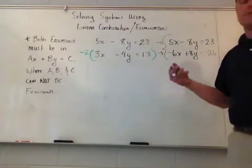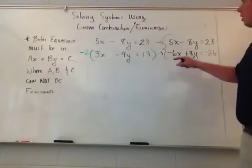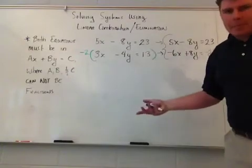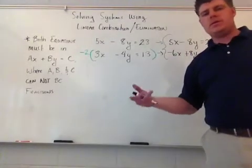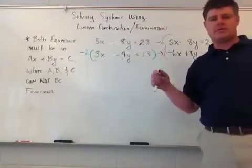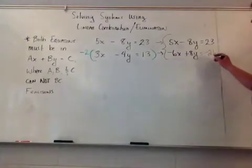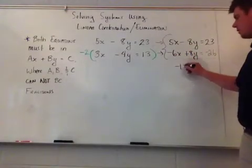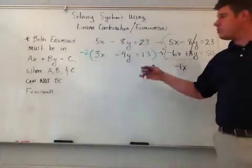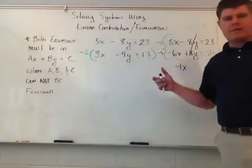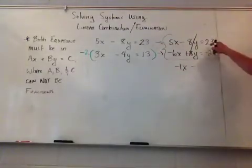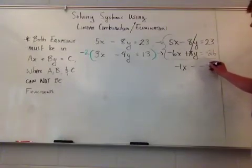Now what I can do is this idea of linear combination. What does 5 and negative 6 make? Because I made them opposites, I'm just going to do the adding. This is why I like to do the opposites. Now it's just, what do these two terms together make? I don't have to worry about doing subtraction. 5 and negative 6 make negative 1x. Negative 8 and positive 8, goodbye. Not in my problem anymore. So now I've done this idea of elimination. I've eliminated one of the variables from my system. That is then going to be equal to 23 minus 26, which is negative 3.